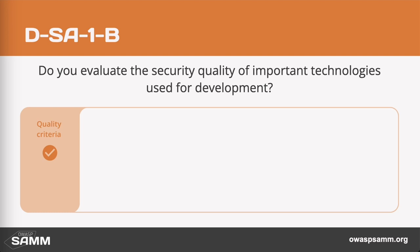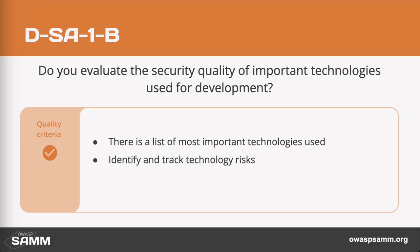The level one question for this stream is: are you paying attention to the security quality of the technology you're using? To do that you need to know what technologies you're using, or at least the most important ones. Are you paying attention to vulnerability reports for the key technologies you're using? You need to identify and track technology risks, and make sure that the risk to these technologies is in line with your organizational baseline.